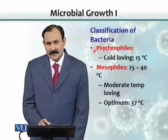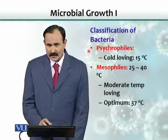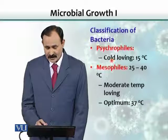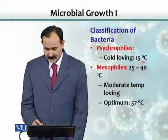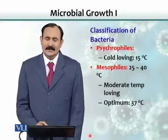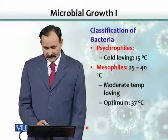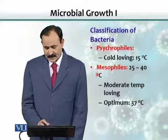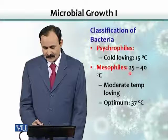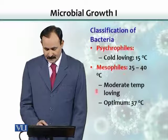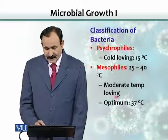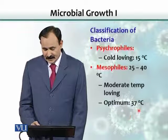Psychrophiles like to grow under cold conditions, and the best temperature for their optimal growth is 15 degrees Celsius. The second group is mesophiles — meso means in the middle. These bacteria like to grow optimally between 25 and 40 degrees Celsius, with best growth achieved at roughly 37 degrees Celsius.